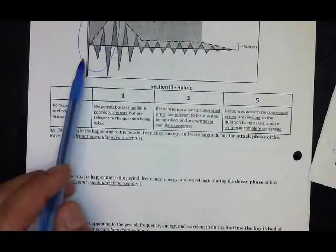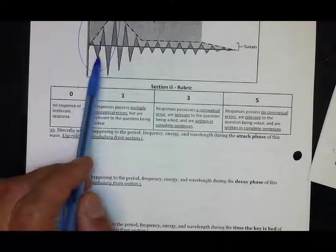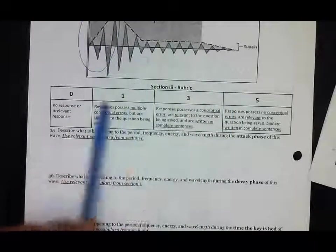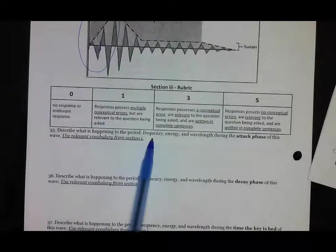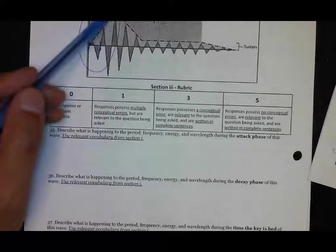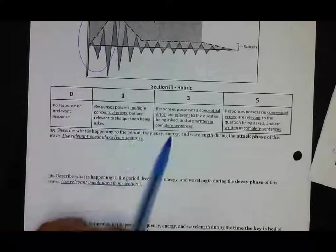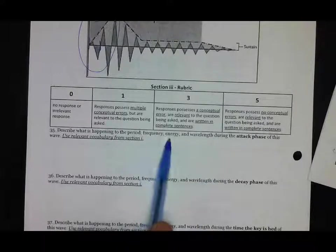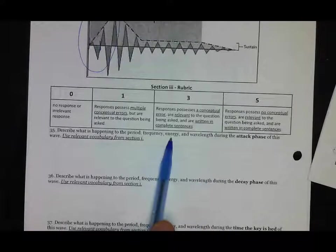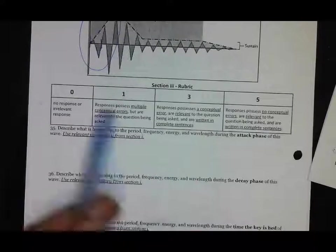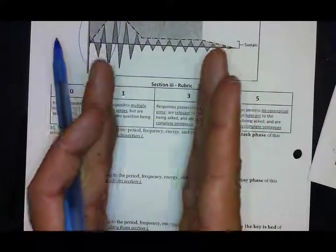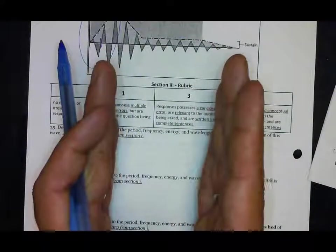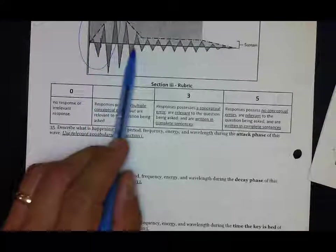Here I would say that the period is really not changing. Frequency, which is how many waves per second or how smooshed together the waves are, they stay about the same distance from one another throughout, so the frequency is not really changing. But the amplitude is going up, so if the amplitude is going up that does say something about the energy. Wavelength is again how far the waves are, how long the waves are, and here if you look it's pretty constant throughout.